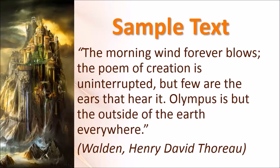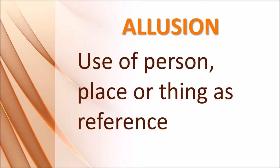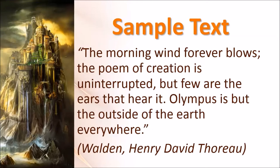The next sample: 'The morning wind forever blows, the poem of creation is uninterrupted, but few are the ears that hear it. Olympus is but the outside of the earth everywhere.' Let's check for the use of a person, place, or thing as a reference — that is, allusion. The word 'Olympus' refers us back to the gods and goddesses and where they lived, giving us a good grasp of the place being described.